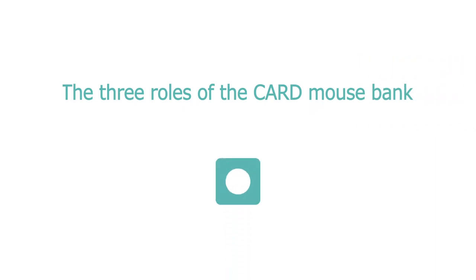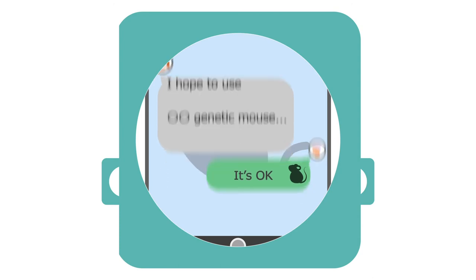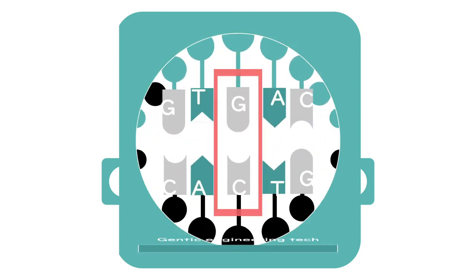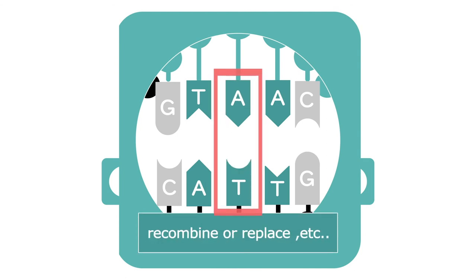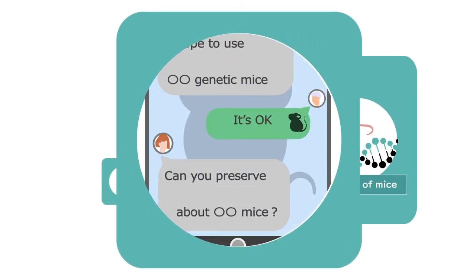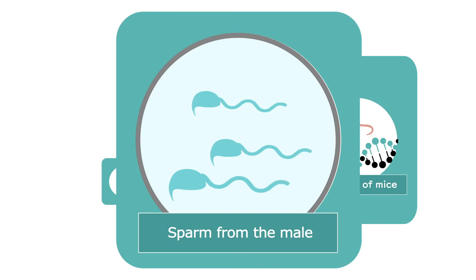The first is creation of mice. We use genetic engineering techniques to recombine or replace the genes of laboratory mice. In doing so, we create genetically modified mice. The second is preservation of mice. We take sperm from the male and eggs from the female...